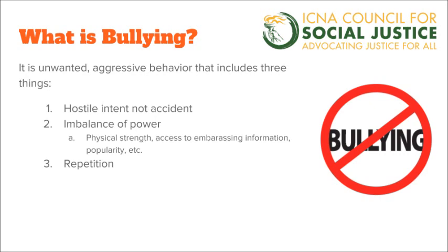The second thing is imbalance of power, meaning the bully has some sort of power or advantage over the victim. For example, the bully could be physically stronger than the victim, or the bully could have access to embarrassing private information and threaten to expose it publicly. It could also be popularity — popularity is a form of power. The bully has a lot of social support and friends who back him or her up.